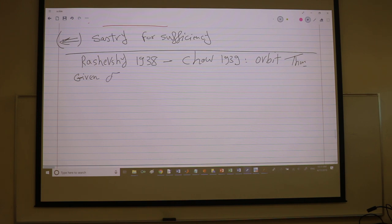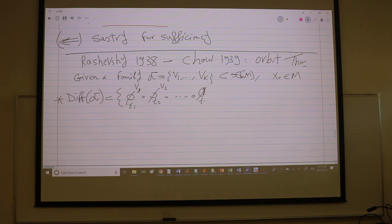So given a family of vector fields, f, and this obviously was an obstruction, family f of vector fields v1 up to vk. This is a subset of the vector fields on n, and given some point say x naught in m, I have two definitions here. I'll define diff of f is this set. It flows along these vector fields, phi 1, phi along v1 by time t1 composed with phi t2 v2 and so and so. Phi tk vk.